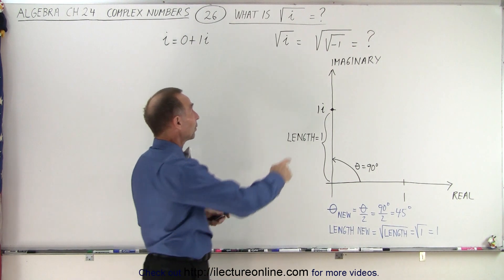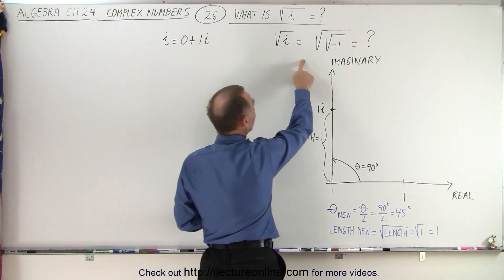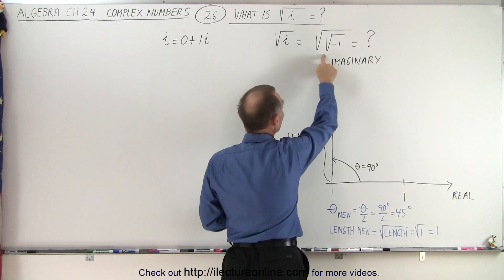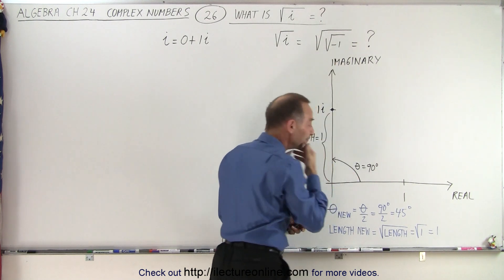It turns out that the square root of i is equal to the square root of the square root of negative 1.